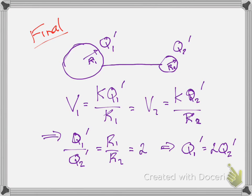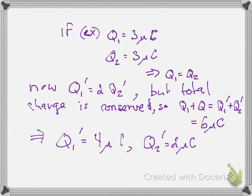If each sphere originally had 3 microcoulombs, the total is 6 microcoulombs. After contact, Q1 prime is twice Q2 prime, so Q2 prime equals 2 microcoulombs and Q1 prime equals 4 microcoulombs. The key point: throughout any conductor the potential is the same everywhere, so if you attach two conductors together — even with just a wire — they must reach the same potential and charge redistributes accordingly.